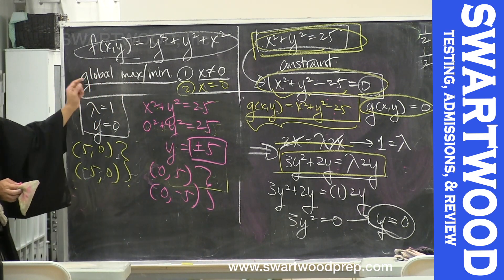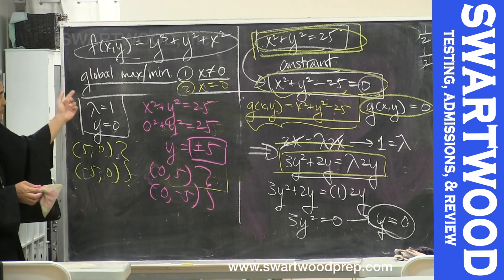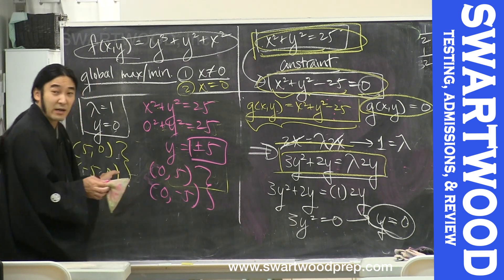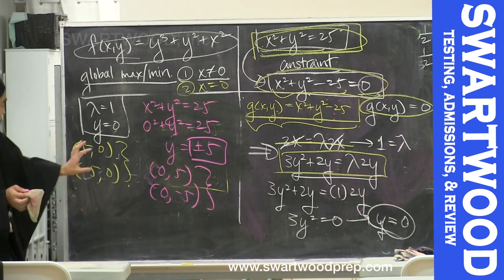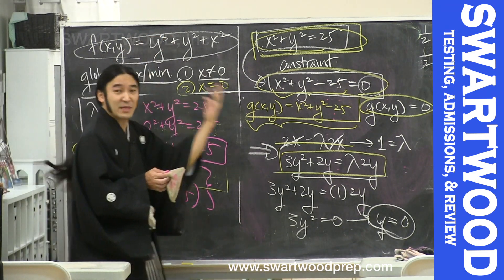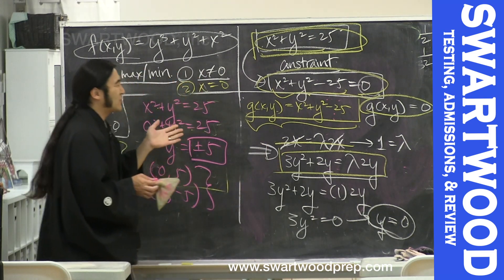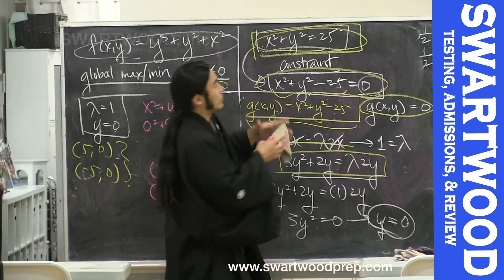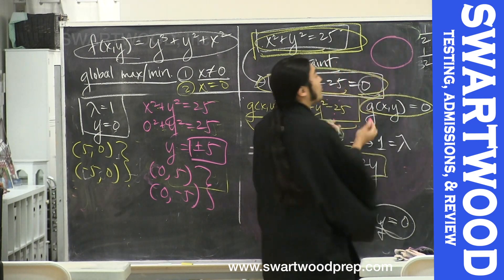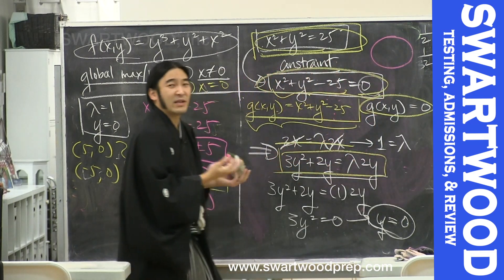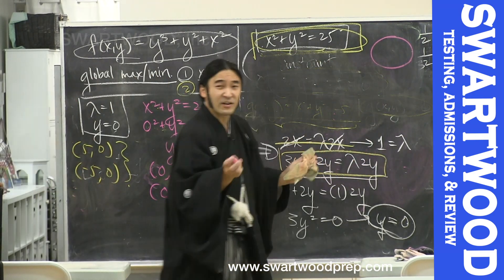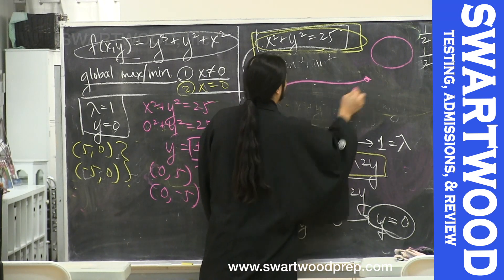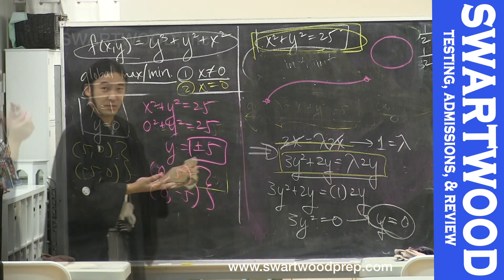So our critical points are: (5, 0), (−5, 0), (0, 5), and (0, −5). Now we're looking for global max and global min. We find critical points and plug them into the original equation to see which is biggest and smallest. We also check endpoints, but since our constraint is a circle, we have no endpoints to worry about.